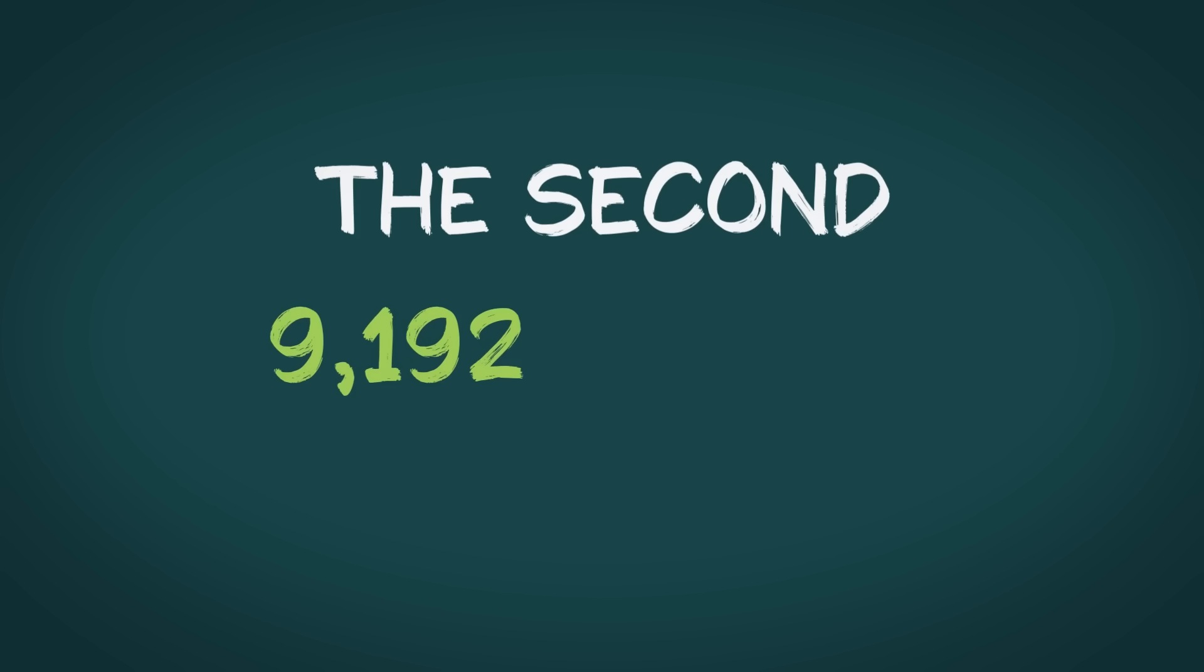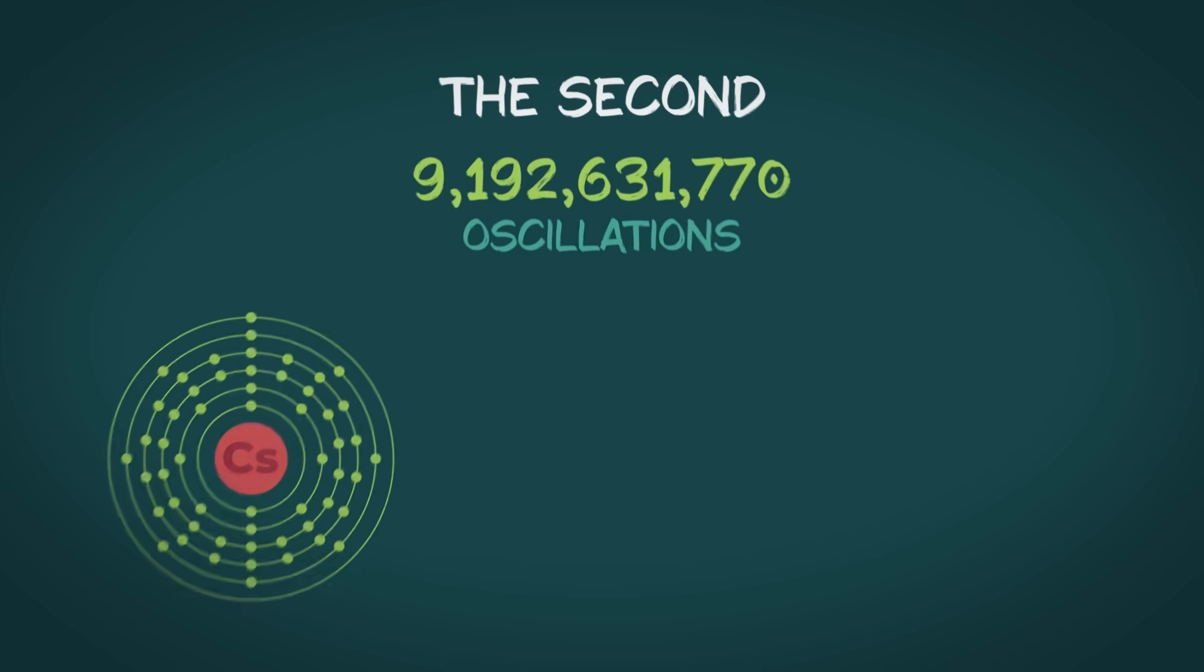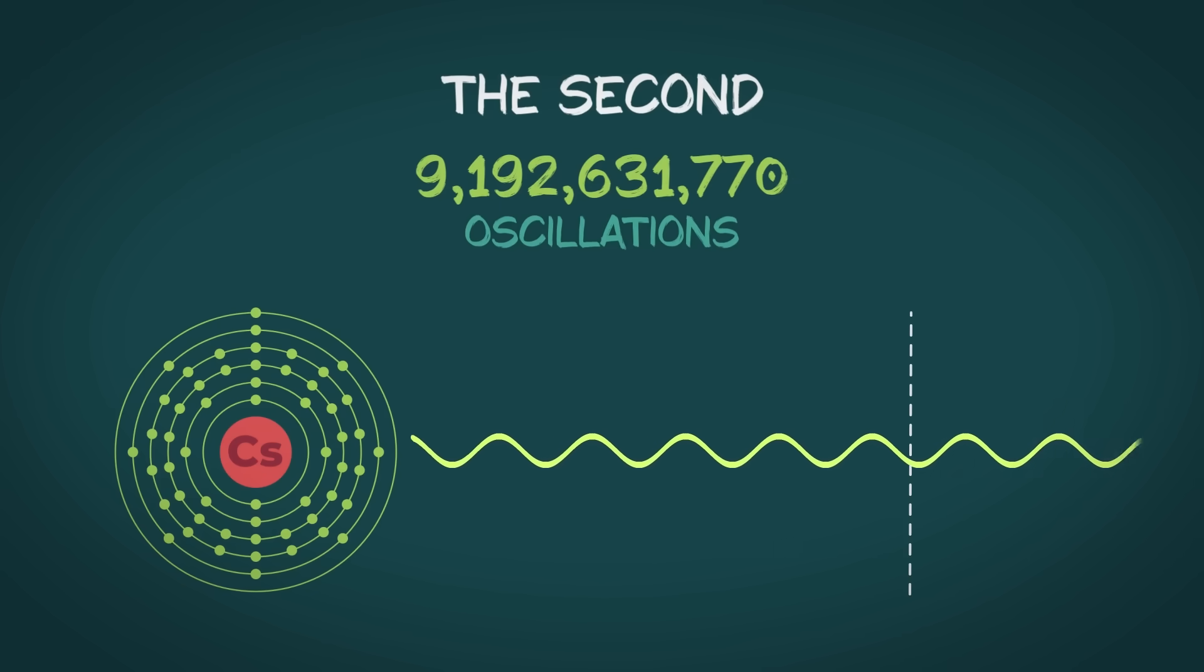And because the energy levels are so stable, so are the transition frequencies. We can count out a specific number of oscillations of a particular frequency and use those counts as the reliable tick of a clock. For example, the basic unit of time, the second, is defined as the amount of time that passes after 9,192,631,770 oscillations of a certain transition light frequency from a cesium-133 atom.